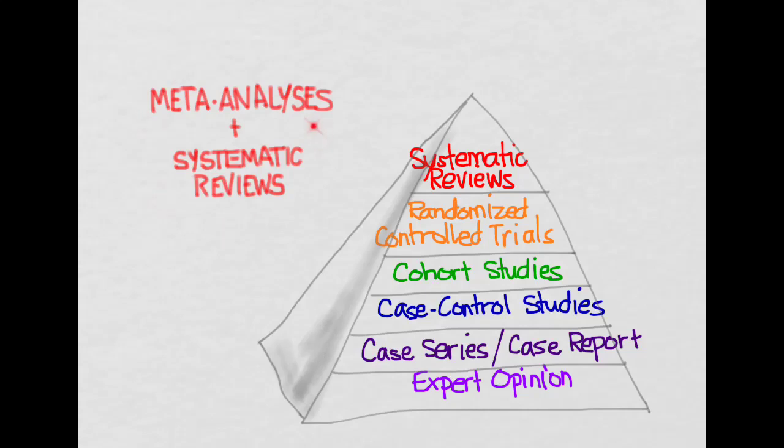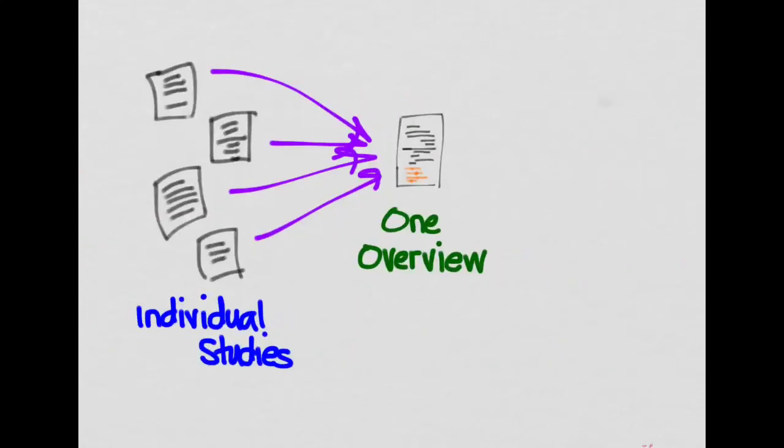Hi, in this video we're going to talk about meta-analyses and systematic reviews. Systematic reviews sit atop the evidence-based medicine pyramid, as you can see here, because they represent the strongest form of evidence that we have. The way these are constructed is by taking individual studies, which we had looked at before, and now you take them all and combine them into one review.